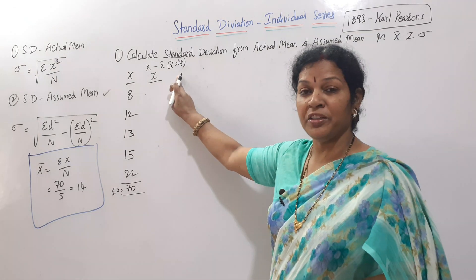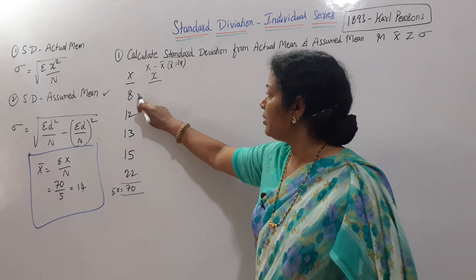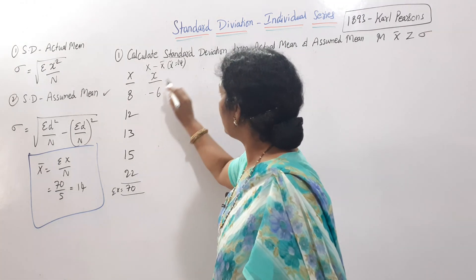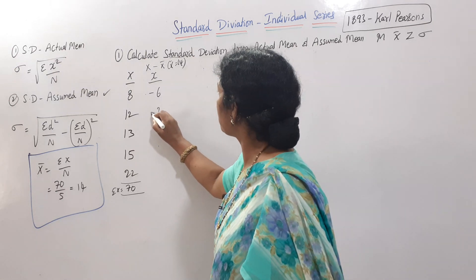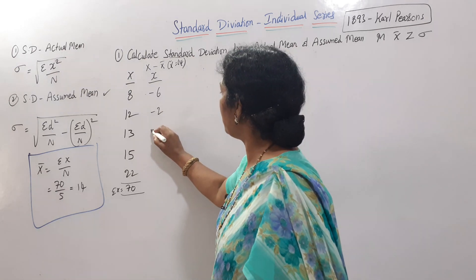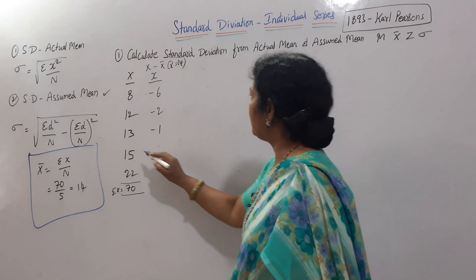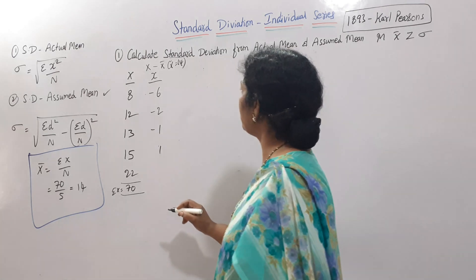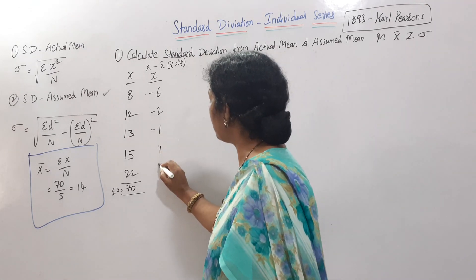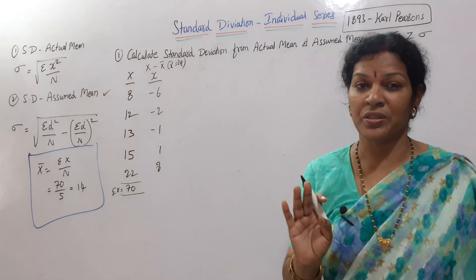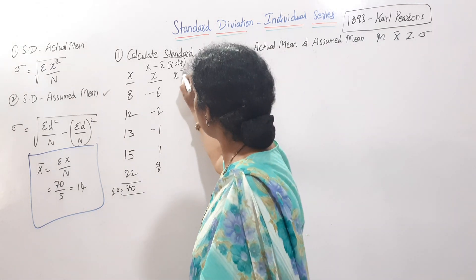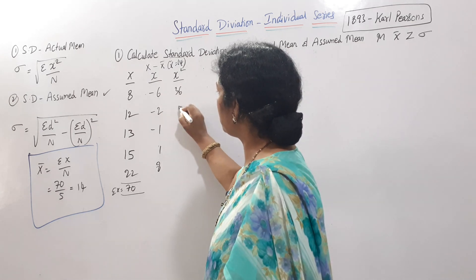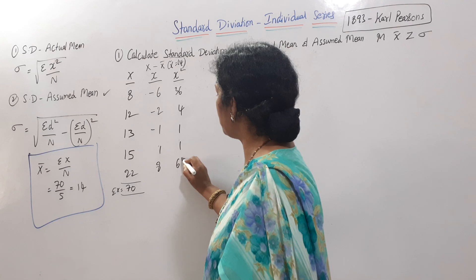Now calculate x minus x-bar, where x-bar equals 14. The deviations are: 8 − 14 = −6; 12 − 14 = −2; 13 − 14 = −1; 15 − 14 = 1; and 22 − 14 = 6. Squaring these: (−6)² = 36; (−2)² = 4; (−1)² = 1; (1)² = 1; (6)² = 36... and 8² = 64.